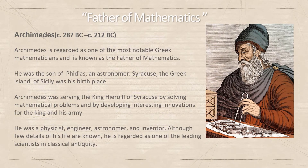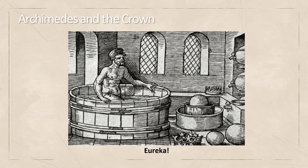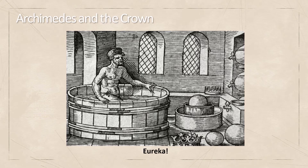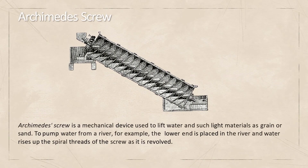Archimedes is regarded as one of the most notable Greek mathematicians. He is known as the father of mathematics. He was a physicist, engineer, astronomer, and inventor, regarded as the leading scientist in classical antiquity. He served King Hiero II by solving mathematical problems and helping his army with interesting innovations. Eureka! This is the moment when Archimedes found out how to measure volume and density. The Archimedean screw is a mechanical device used to lift water and light materials such as grain. It is still being used in many applications in the modern world.